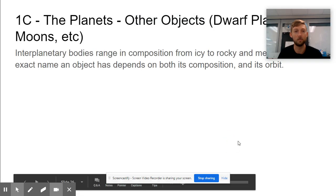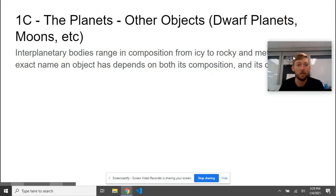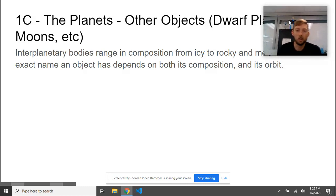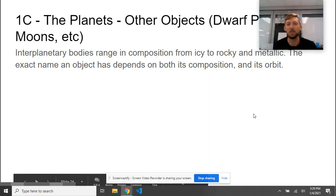All right, so let's talk about the other objects that aren't planets in our solar system. We've got dwarf planets, moons, and other things. Interplanetary bodies range in composition from icy to rocky and metallic.